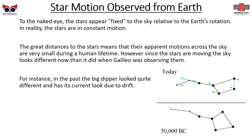We observe stars from Earth. To the naked eye, the stars appear fixed in the sky — depending on the Earth's rotation and the time of year, you see the stars. But those stars are always in constant motion. The great distances to these stars mean that their apparent motions across the sky look very small in our lifetime. Since the stars are moving, the sky looks different now than when Galileo was observing them. For instance, in this mock-up of the Big Dipper, you recognize it on top, but in 50,000 B.C. it looks almost completely different — more like a kite than a dipper. That is all due to drift, because the stars are always moving and our observation of them changes as well.